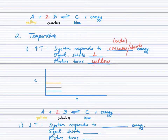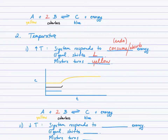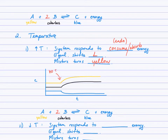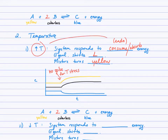Unlike a concentration stress, which shows an instantaneous spike in the concentration of one substance, a temperature stress will have no spike — we just start to show the change as the equilibrium shifts left. As it shifts left, A and B both increase until they reach a new plateau, and C decreases to a new plateau. There is no spike for a temperature stress.